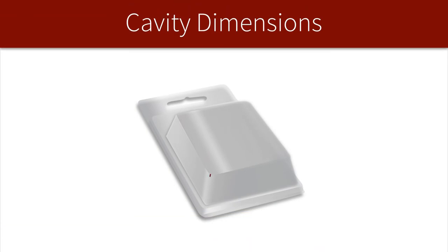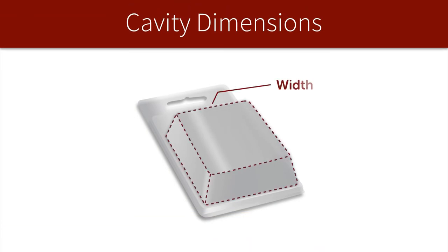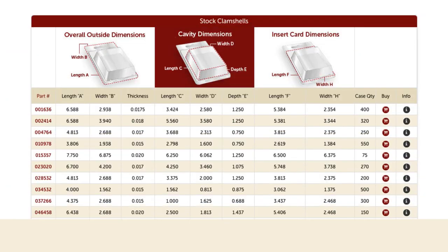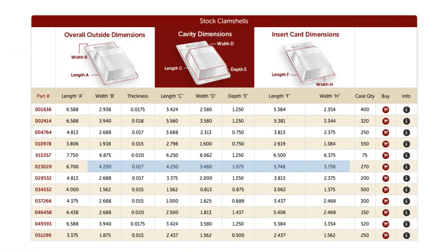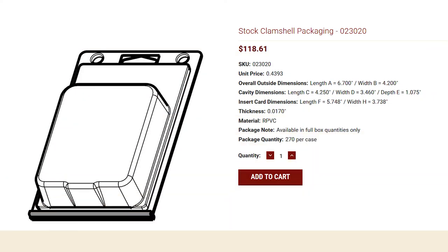Cavities are slightly tapered, and the cavity dimensions listed on the chart are based on the narrowest dimensions and only account for the flat surface area. Note the round corners of the cavity. Once you find a size that will work, you can click on the part number to view product details, like the insert card and overall outside dimensions.